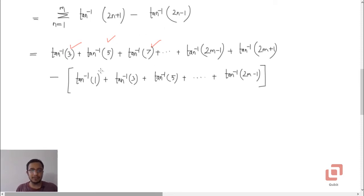What will it be? That additional term would be tan inverse of 1. So I've written that in the bracket: tan inverse of 1, tan inverse of 3, tan inverse of 5, and so on.